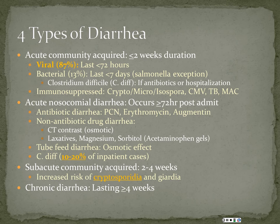Acute community-acquired diarrhea can occasionally be C. diff in about 2% of cases, so be on the lookout for patients who've had recent hospitalizations in the past month or recent antibiotic therapy. Also pay attention if a patient is immunosuppressed, as they may have atypical organisms such as cryptosporidium, microsporedia, isospora, viral causes, or mycobacterial etiologies.